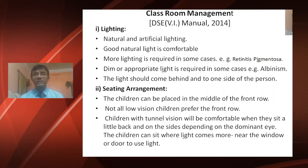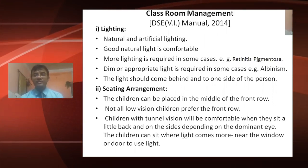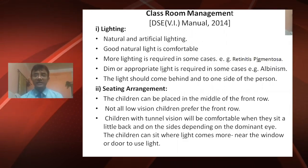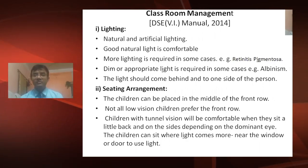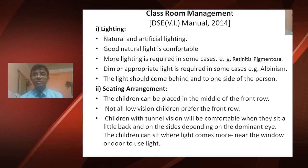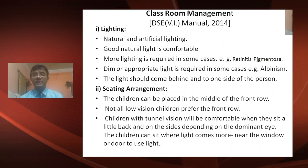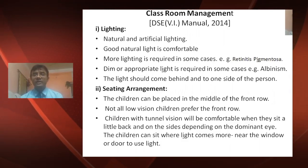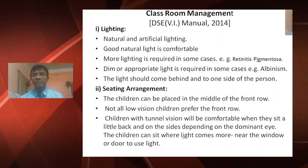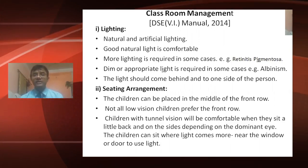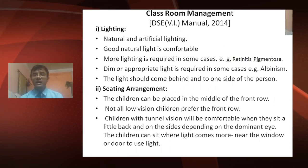Now coming to classroom management. The first factor is lighting. Lighting should be adequate, whether natural or artificial. Good natural light is comfortable, but more lighting is required in some cases — for example, in retinitis pigmentosa. Dim or appropriately reduced light is required in other cases — for example, in albinism.